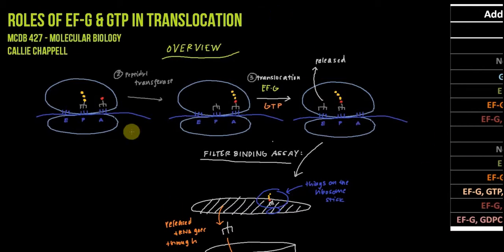Before we jump into the data, let's take a quick overview look at translocation in translation. We're jumping into the second step of translation where we have a tRNA with a polypeptide in the p-site and an aminoacyl-tRNA that came into the a-site. Step two of translation is peptidotransferase, where this polypeptide gets transferred onto this amino acid. We have a tRNA that's no longer charged here in the p-site, and the last step is translocation.